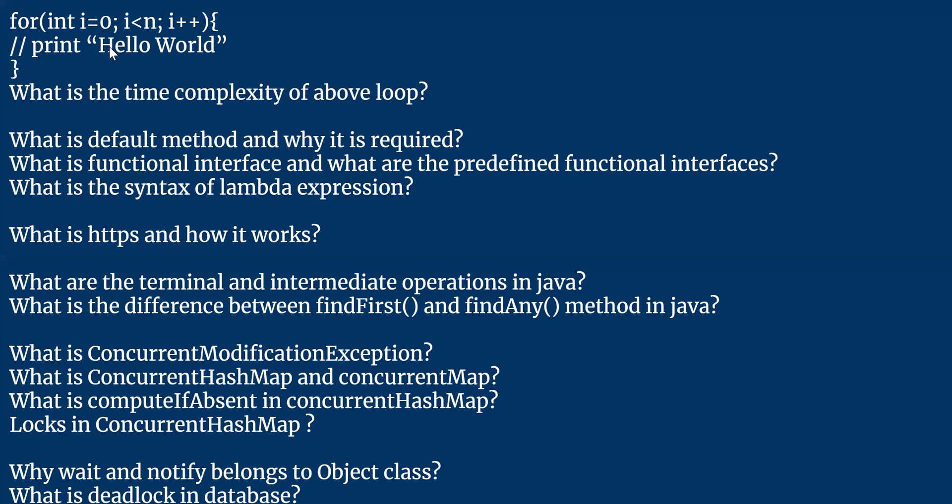Big O represents the worst case situation — it's going to execute a maximum of n times. What if we modify this loop to have one more loop inside it — a nested loop — also running n times? In that case, the inner loop will execute n times again, so it becomes n squared. The time complexity will be Big O of n squared.